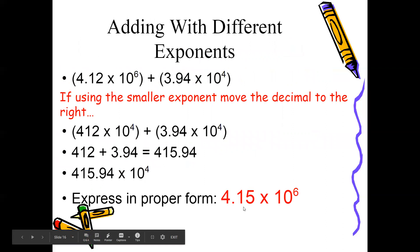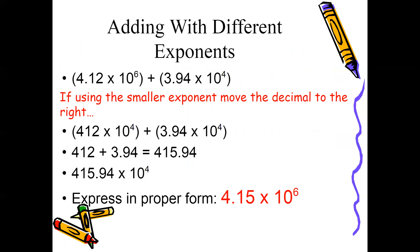The first example: 4.12 × 10⁶ plus 3.94 × 10⁴. First, decide whether you're going to use the smaller or larger exponent. In this example, we're going to use the smaller exponent, which is 10 to the 4th power. So we decrease 10 to the 6th to 10 to the 4th, meaning we're going down two digits.